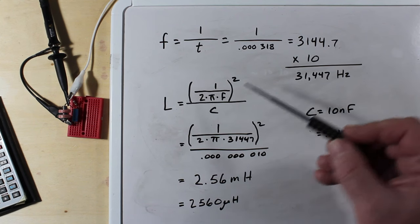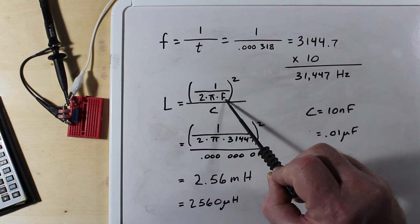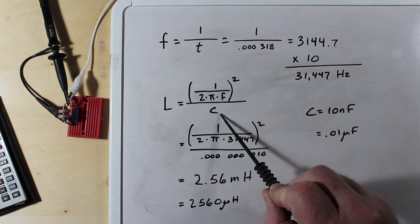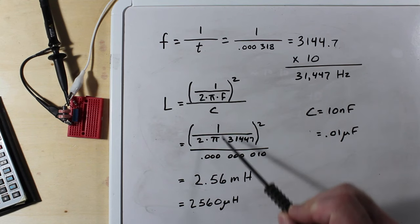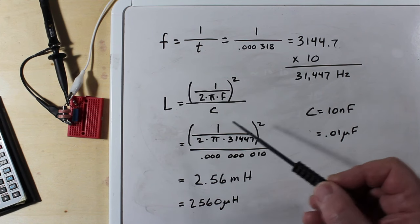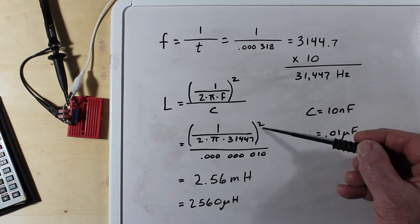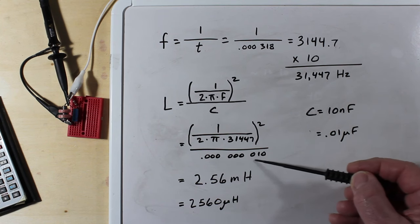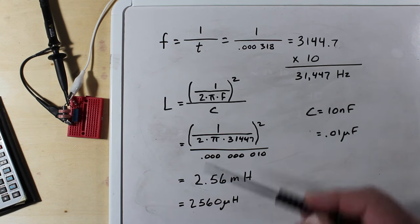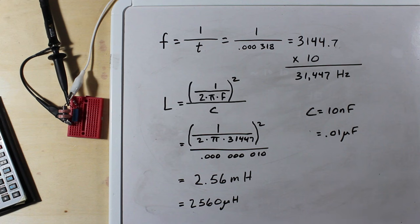We then place that into our formula here. Here is our frequency. We know our capacitor because we chose it - our 1% 10 nanofarad capacitor, and that is this one right here. And if we fill in the blanks, this is what we end up with. Throw this through our calculator - 2 times pi times this amount, 1 over, square that, and then divide that result by this tiny number right here which is our capacitor. And we end up with 2.56 millihenries for the size of that inductor. Same as saying 2560 microhenries, same thing. And that is the basis of it.